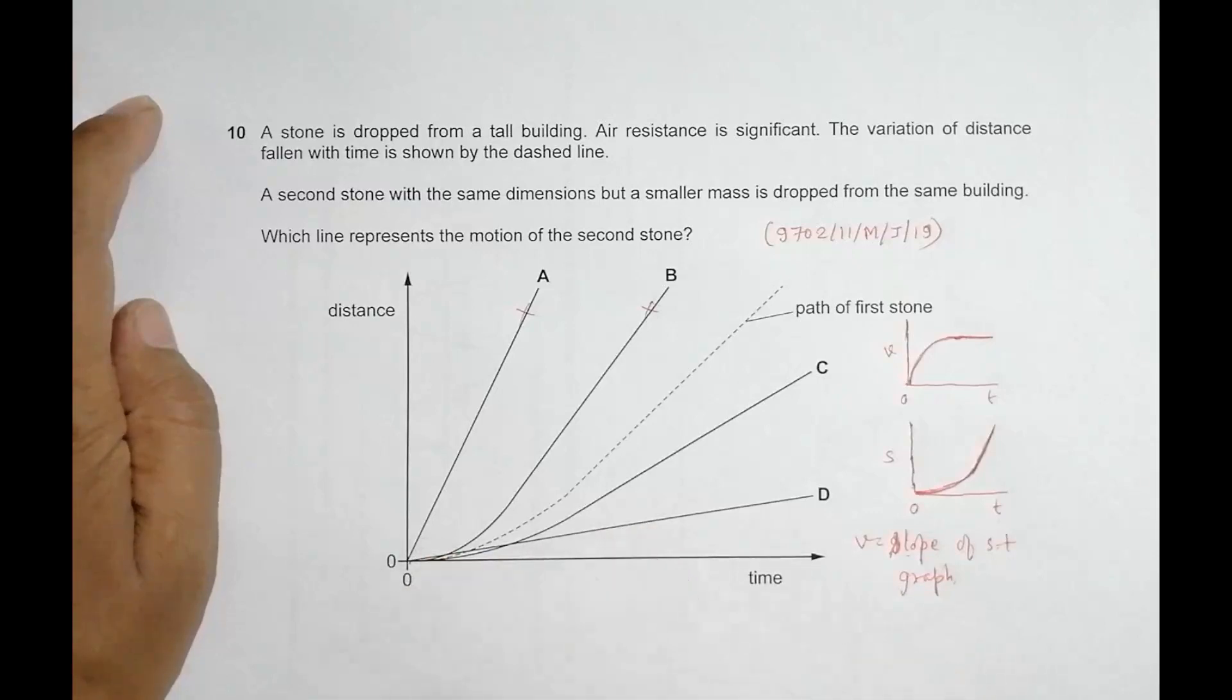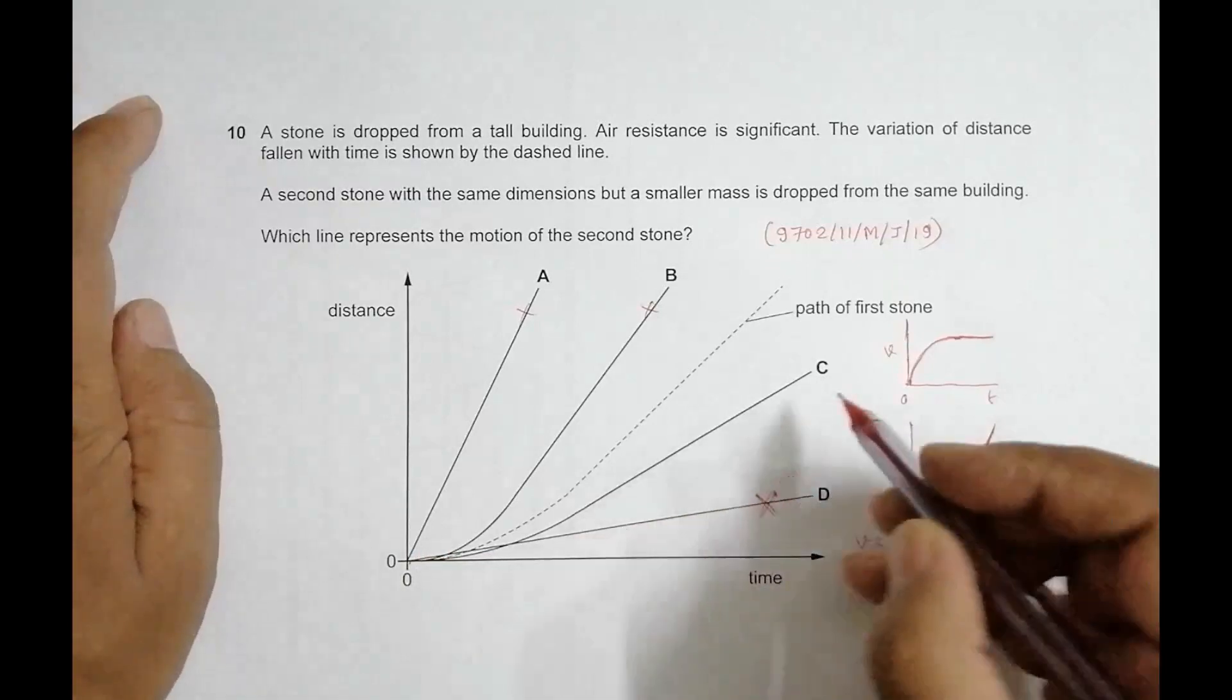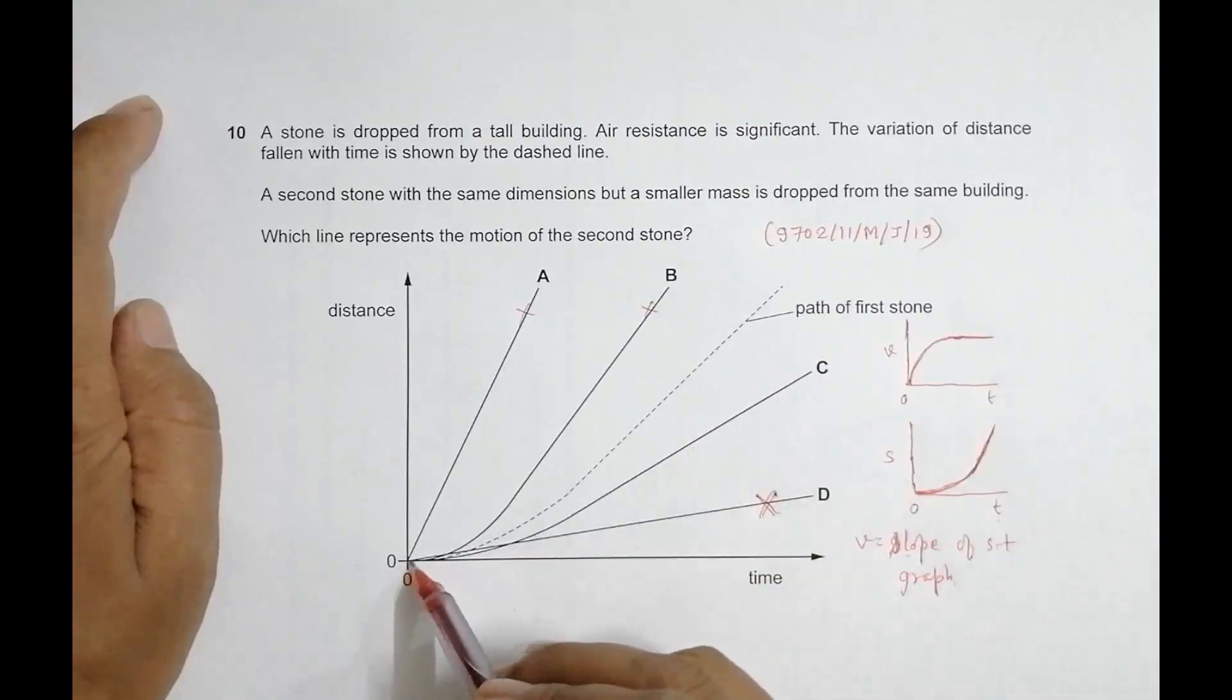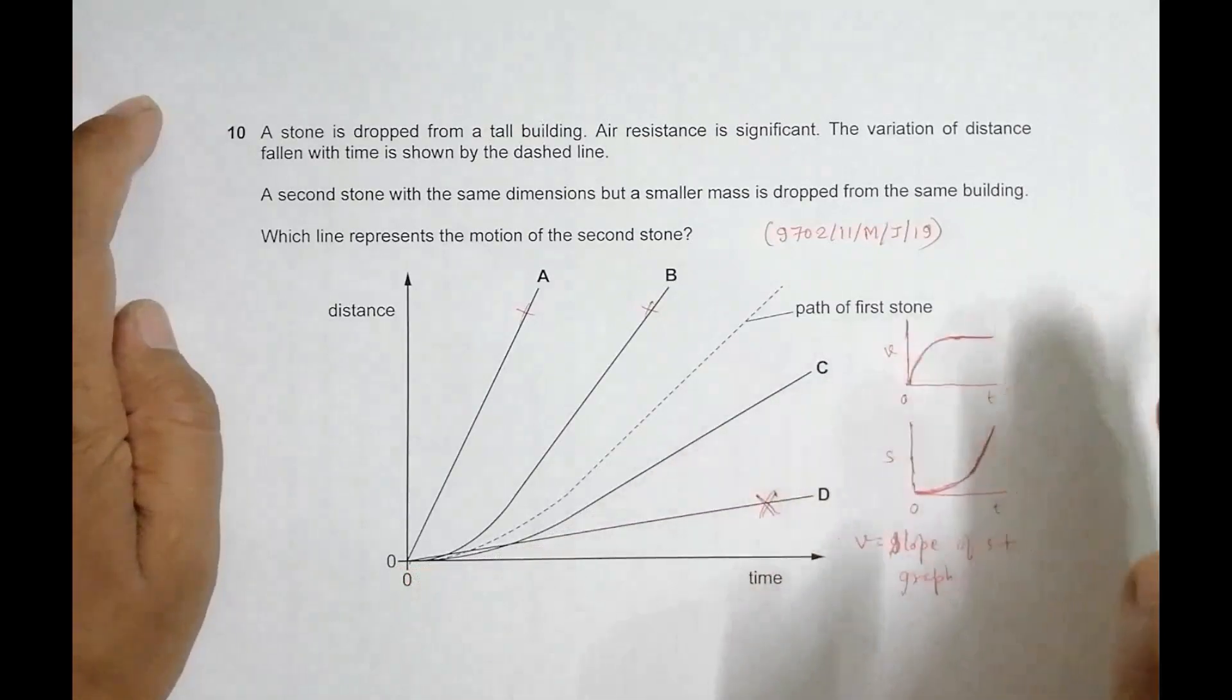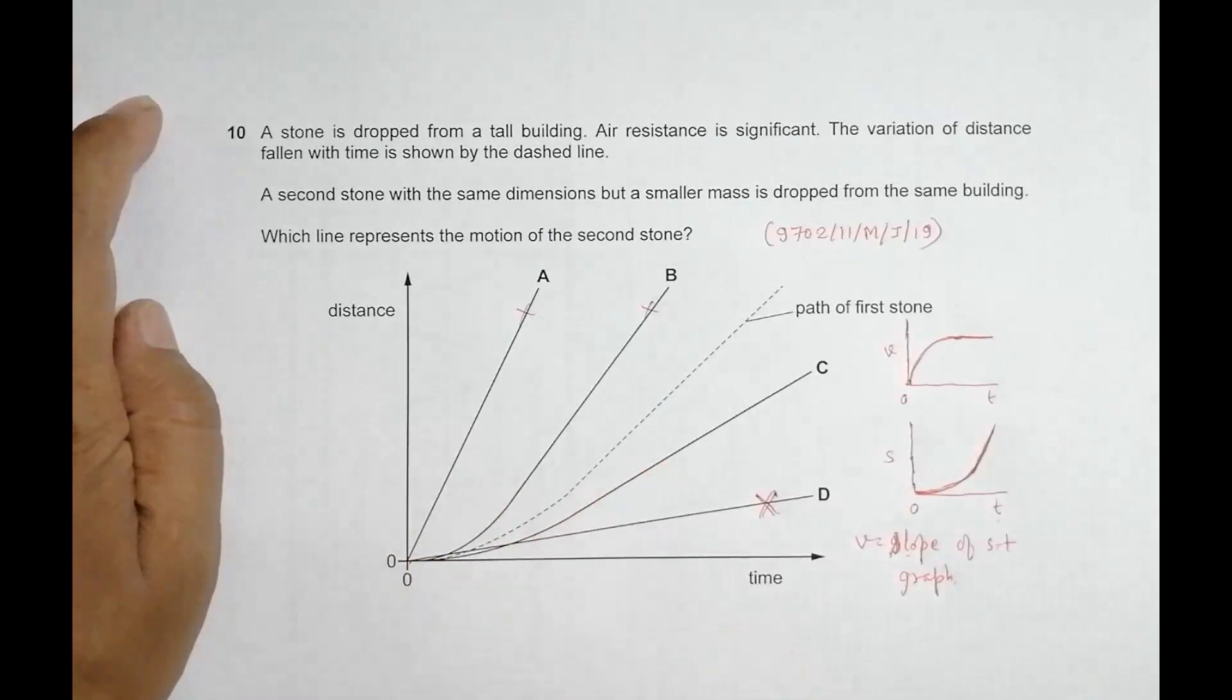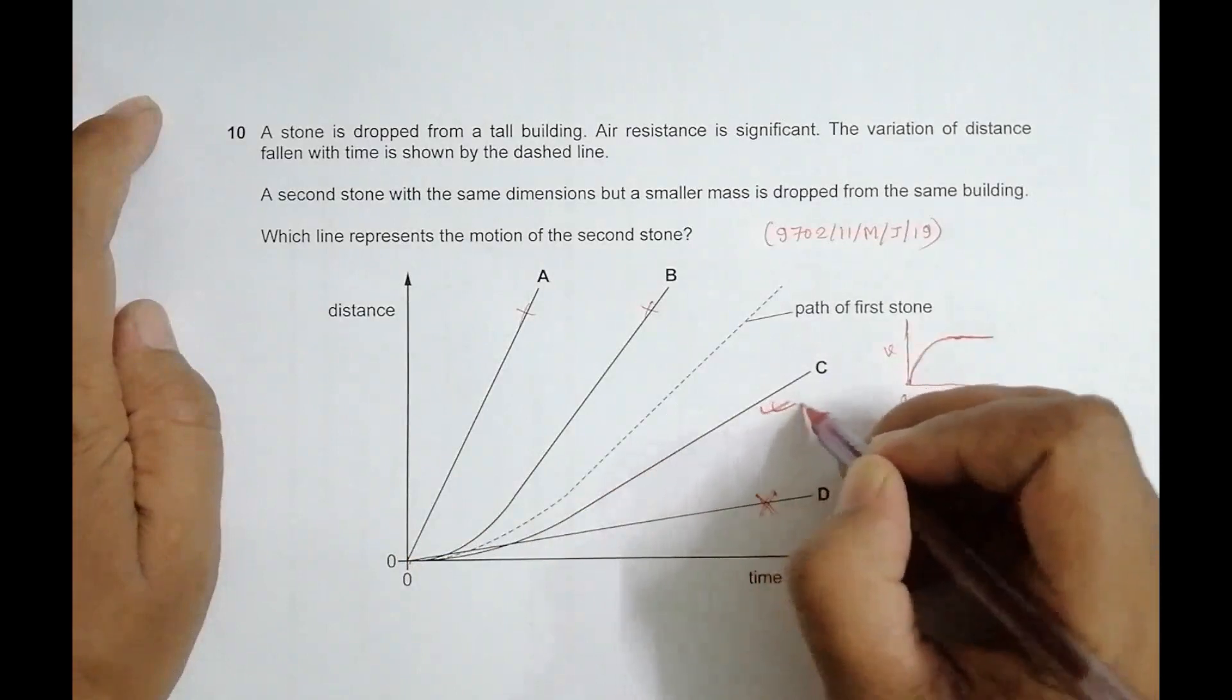So the only true graph is choice number C, because it resembles this path. Initially the slope increases, and from here the slope is constant. Constant slope means the velocity has become constant. Choice C should be the correct choice.